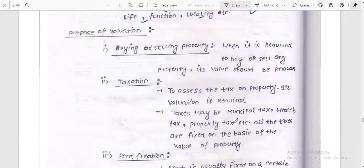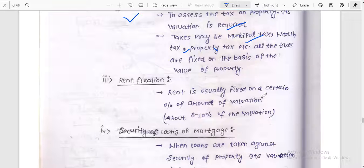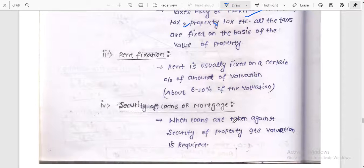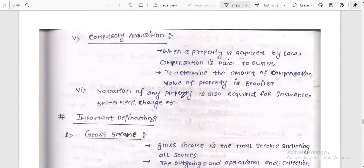What are the purpose of valuation? Buying or selling property - when it is required to buy or sell any property, its value should be known. Taxation - to assess the tax on property, its valuation is required. Tax may be municipal tax, wealth tax, property tax, etc. Rent fixing - rent is usually fixed on a certain percentage or amount of valuation, about 6 to 10 percent of the valuation. Security, loans, or mortgage - when loans are taken against the security of property, its valuation is required. Compulsory acquisition - when a property is acquired by law, compensation is paid to owner. To define the amount of compensation, value of property is required. Valuation of any property is also required for insurance.